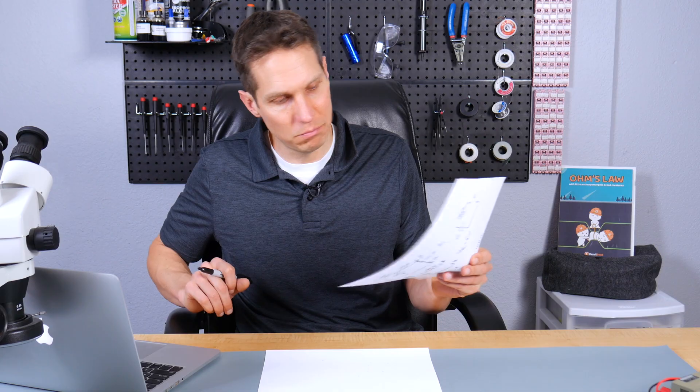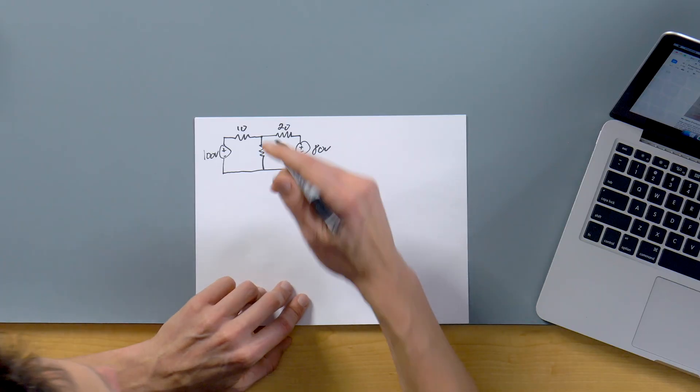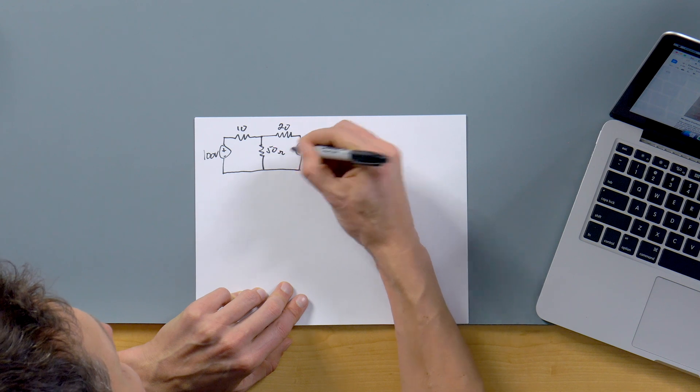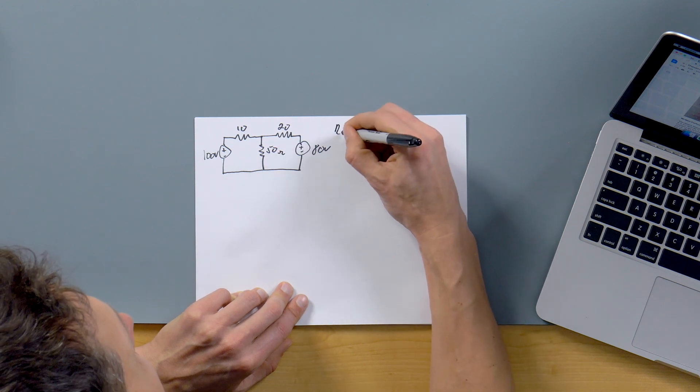Okay, since that one was simple, let's do another one really quick. Okay, so in this circuit, we are going to say that the 50 ohm resistor right here is our load.